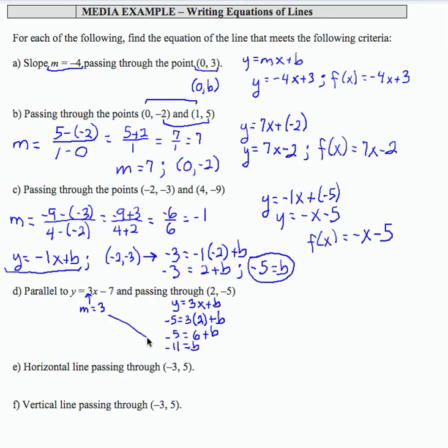So I'm going to use my slope from the parallel line and the b value that I found going through this ordered pair to write my new equation. So y equals 3x plus negative 11, y equals 3x minus 11.